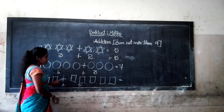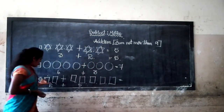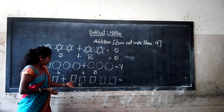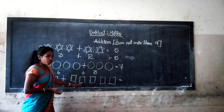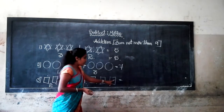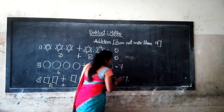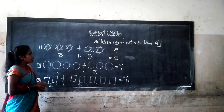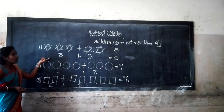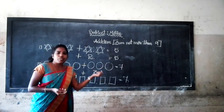Then two plus five. Let's count: one, two, three, four, five, six, seven. Students, here addition with the help of pictures.